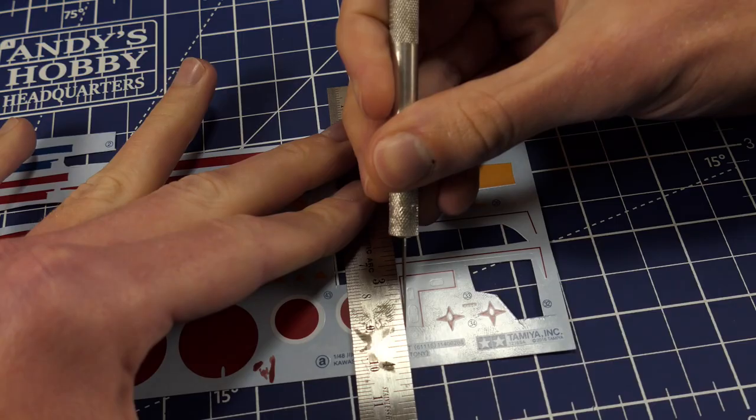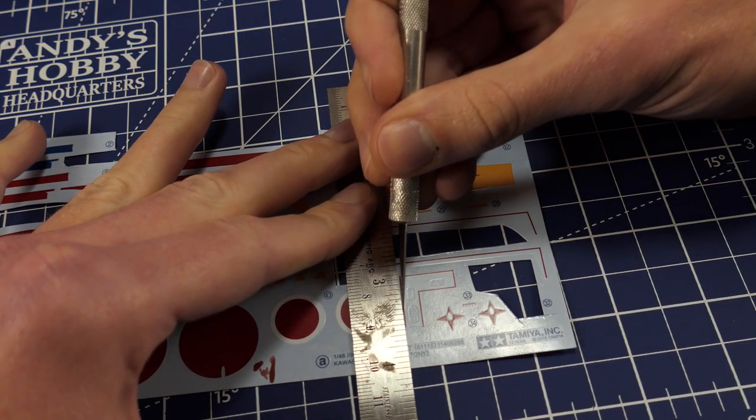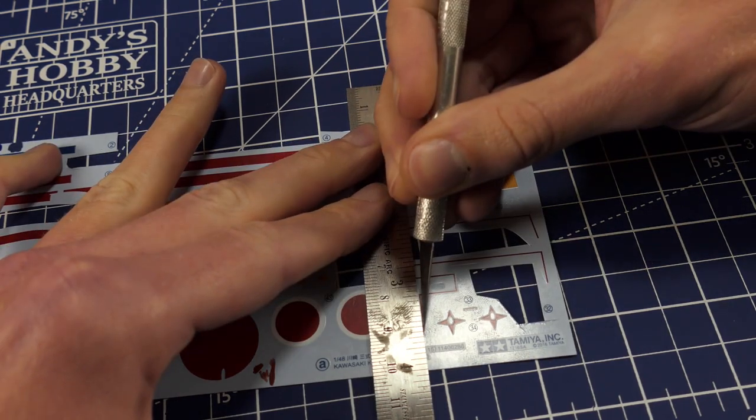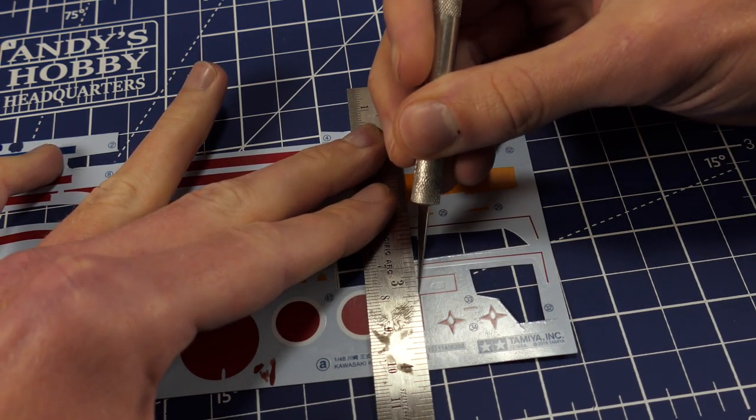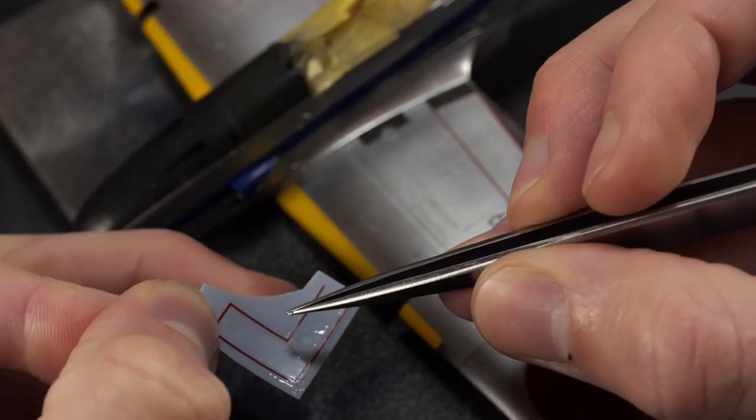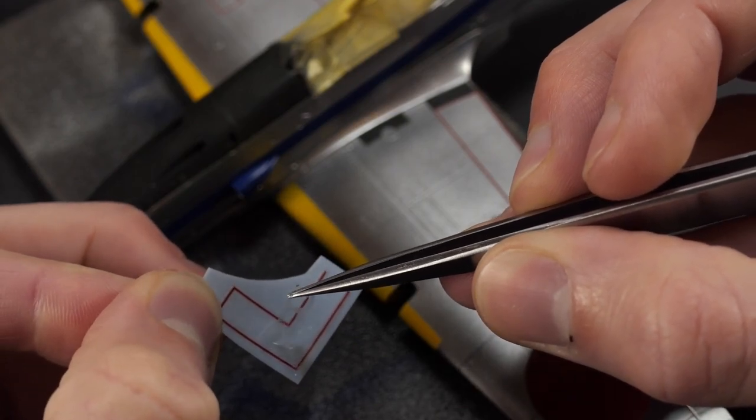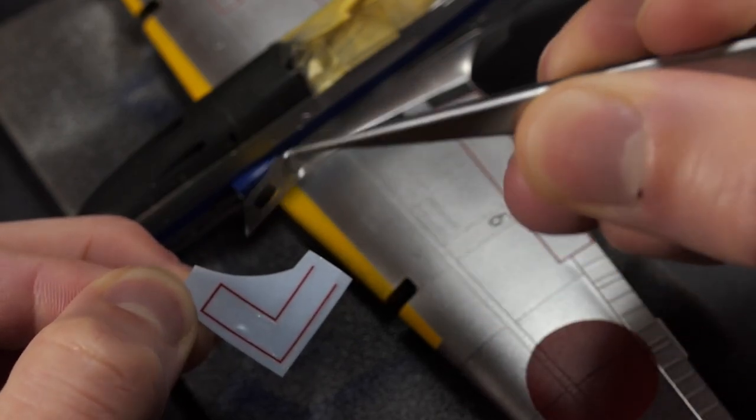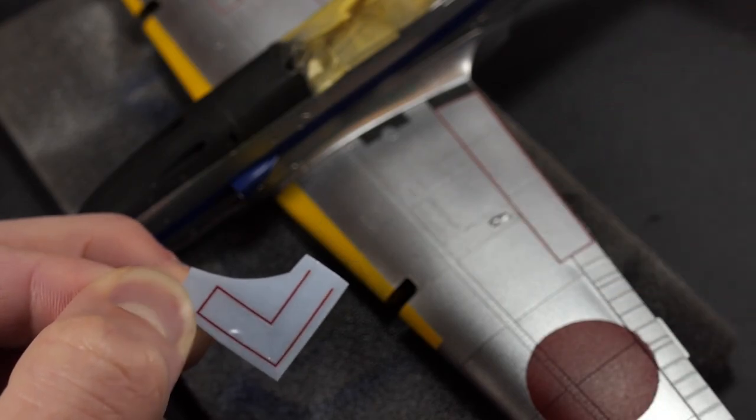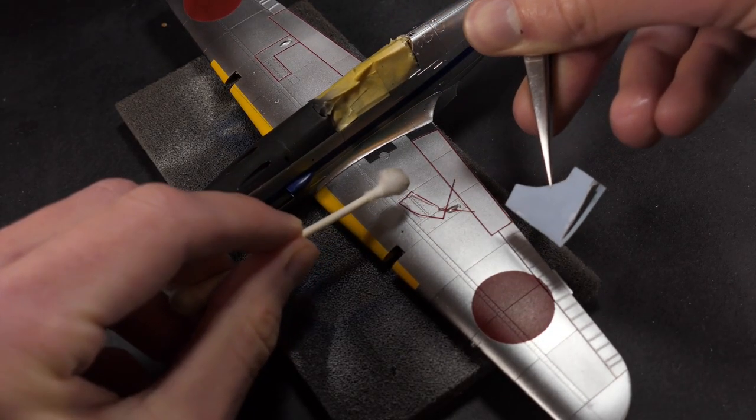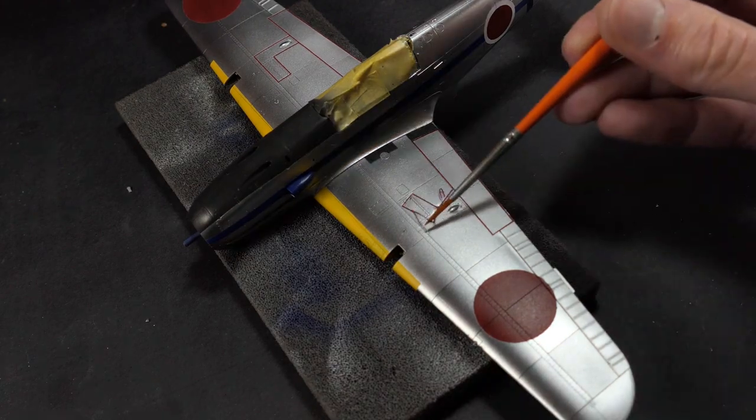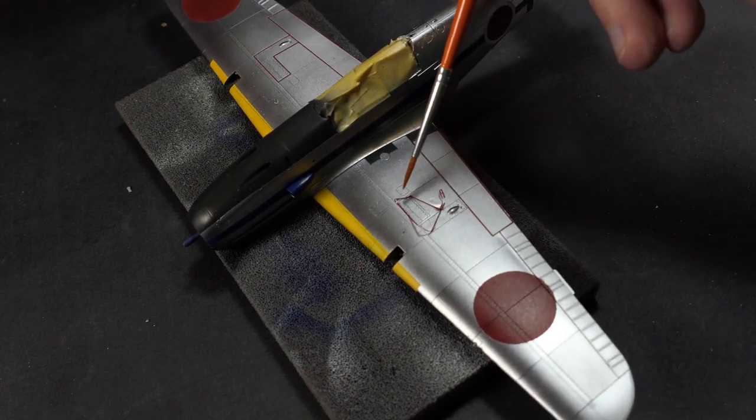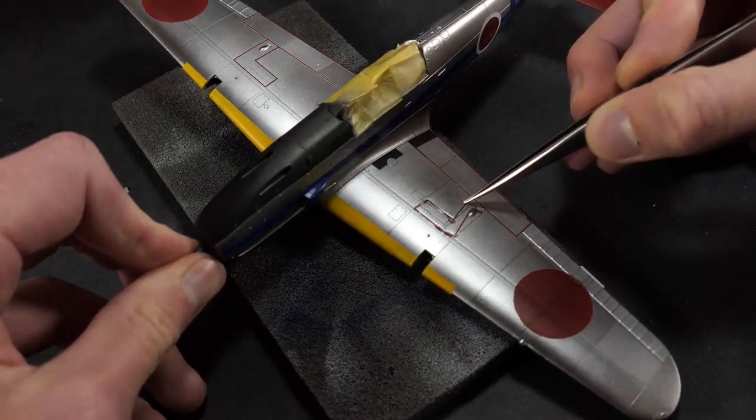Some of these decals that are very thin lines have a clear center to them and that makes it a lot easier to put it on the model and get it situated properly. But you also risk the silvering of that clear film. So in these cases I try to cut it away as much as I can. Unfortunately you can see it does lead to challenges when you go to put it on. But with some patience you can usually straighten it out.